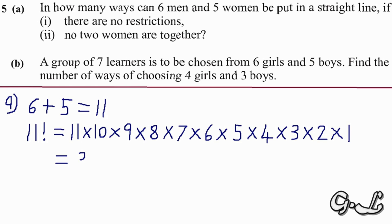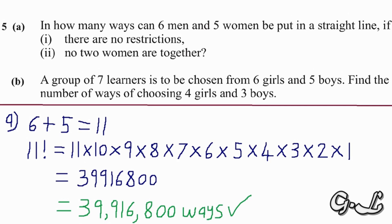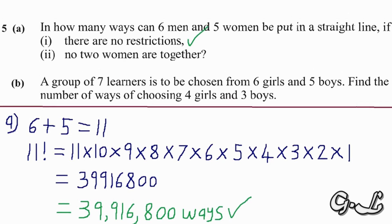Using your calculator, eleven factorial gives you 39,916,800. These are the number of ways of putting six men and five women in a straight line if there are no restrictions. This is how you easily score marks in an exam room. We are now done with roman numeral one and we move on to roman numeral two.